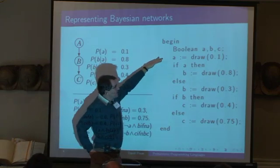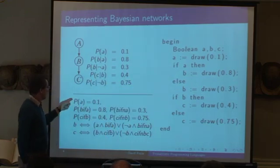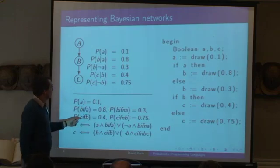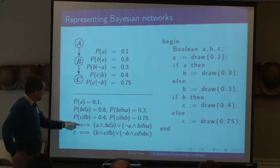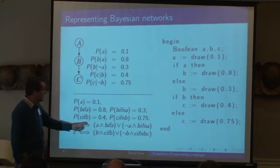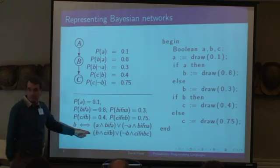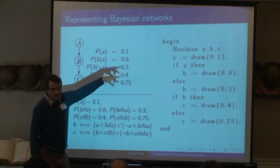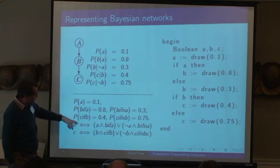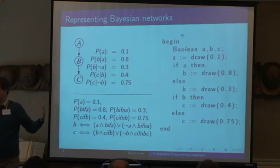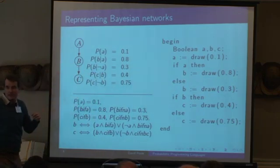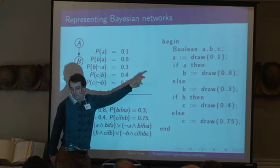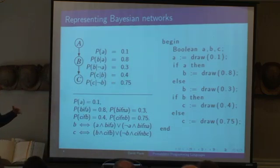One thing we can do is name all of these choices — B-if-A, B-if-not-A, C-if-B, C-if-not-B — basically name each of the random samples. Then we get a deterministic system showing how B depends on these inputs and how C depends on these inputs. So in some sense this Bayes net, this Simula program, and these independent choices plus a deterministic system that gives consequences, is going to be the basis for a lot of programming languages. The language can get more and more complex, but it basically has the same structure: independent draws plus logical consequences.